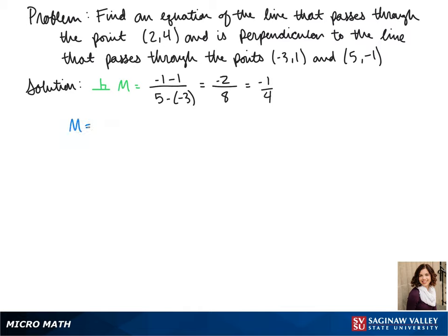Since our line is perpendicular to that, our slope is the opposite reciprocal, so our slope is 4.